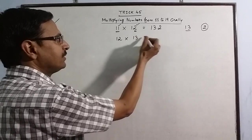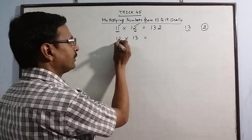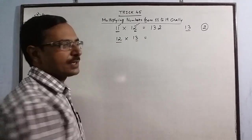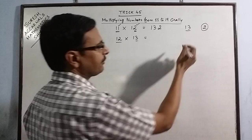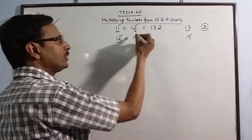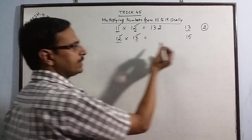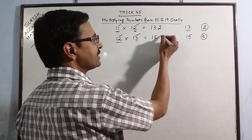One more example of this kind. 12 into 13. The first step is 12 plus 3 or 13 plus 2 is 15. The second step is to multiply the units places. 2 into 3 is 6. Now this is a single digit. So 156 is the answer.